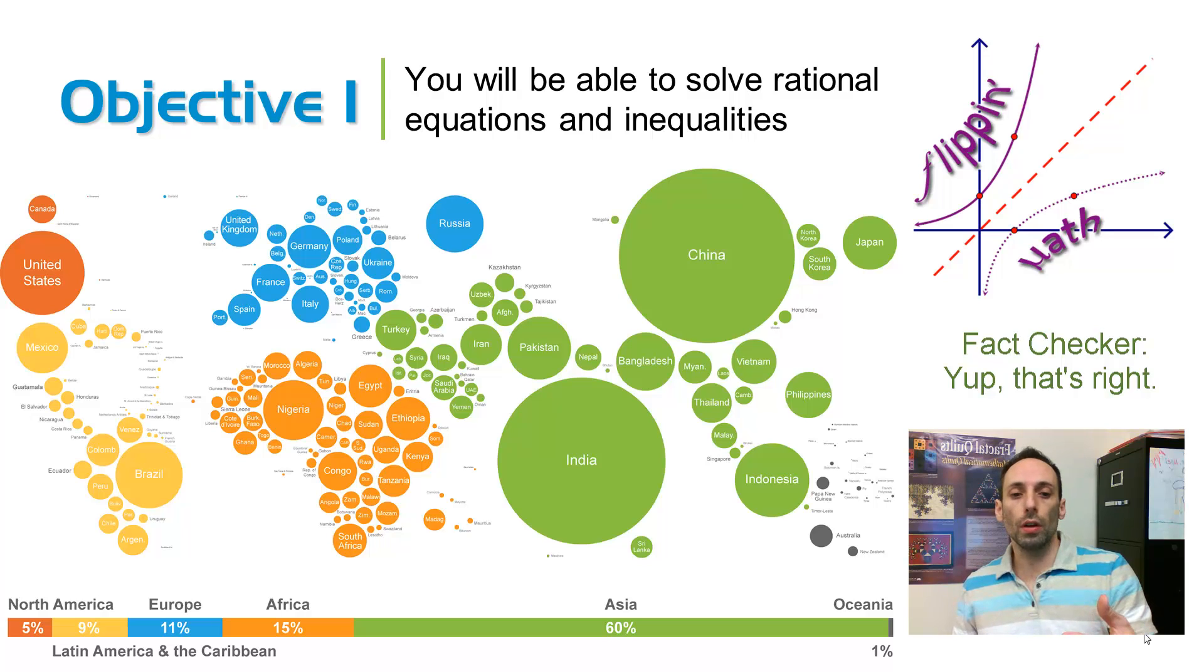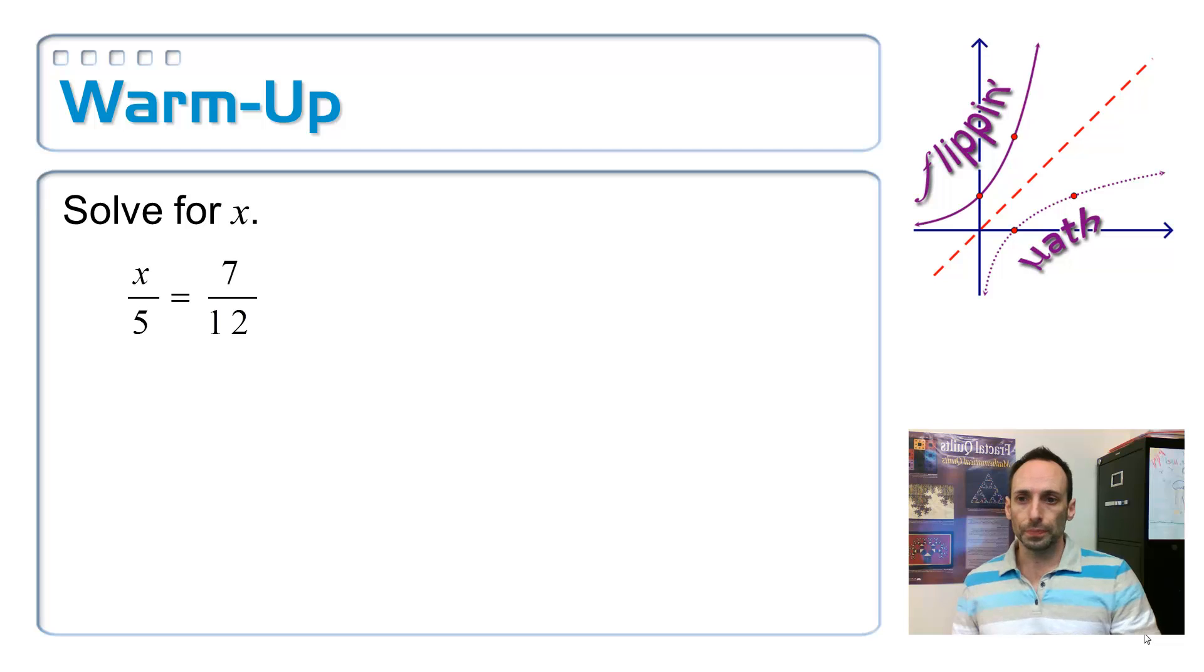This is one of those kind of proportional maps in terms of population. And I chose this because that's what solving rational equations mostly looks like, is proportions. And can you solve a proportion? If you can, you can do this without too much trouble. So let's look at just one simple warm-up question. It's a proportion. How do you solve proportions?